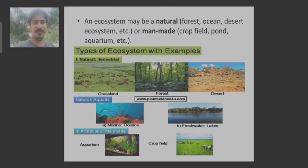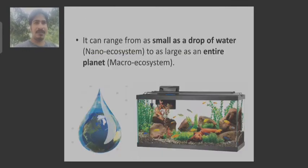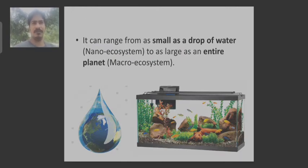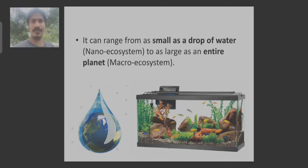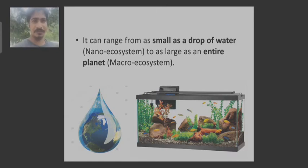Here you can see pictures of various ecosystems. Now, what is the size of an ecosystem? The size may range from a small drop of water, which is also called a nano ecosystem, to as large as the entire planet, which is called a macro ecosystem.